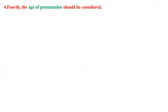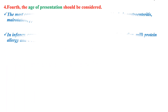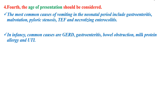Fourth, the age of presentation should be considered. The most common causes of vomiting in the neonatal period include gastroenteritis, malrotation, pyloric stenosis, tracheoesophageal fistula, and necrotizing enterocolitis. There are also other causes of vomiting in children.